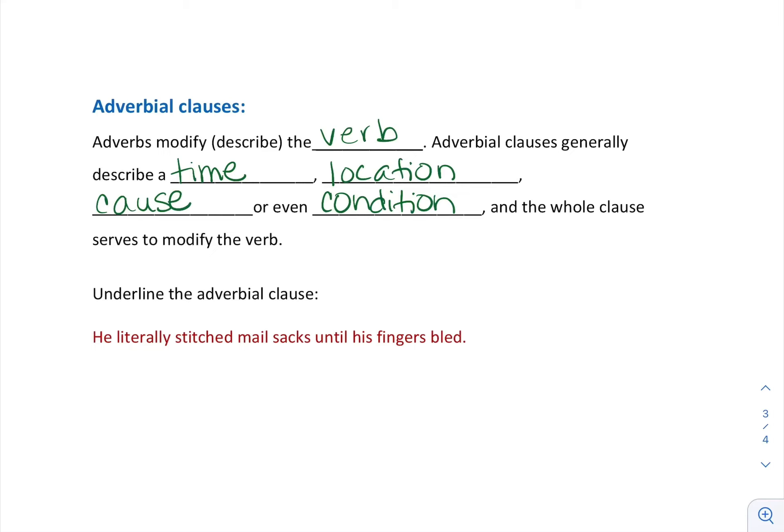If I said "He literally stitched mail sacks until his fingers bled," what is the adverbial clause? The verb is 'stitched.' What describes—remember an adverb: how, when, where. So I've got some time here. How long did he stitch them? Until his fingers bled. I can take the adverbial clause out and it still makes sense: "He literally stitched mail sacks." We get more information about how long. This whole thing is the adverbial clause—it contains an adverb and then some more words that help. The dependent clause 'until his fingers bled' modifies the verb to stitch. It's an adverbial clause of time.